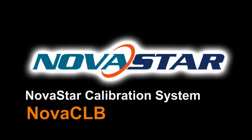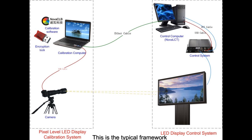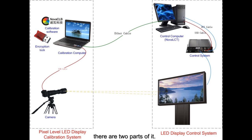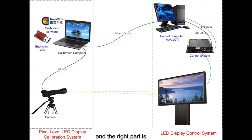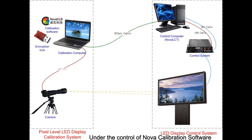This is the typical framework of the Nova Calibration System. As depicted in a picture, there are two parts: the left part is the Pixel-Level LED Display Calibration System, and the right part is the LED Display Control System, under the control of Nova Calibration Software.